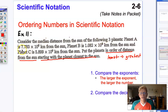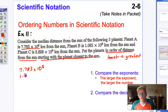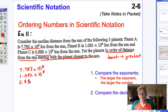We've got Planet A, which is 7.783 times 10 to the 8th. And then we've got Planet B, which is 1.082 times 10 to the 8th. And then finally we have Planet C, which is 5.899 times 10 to the 9th.